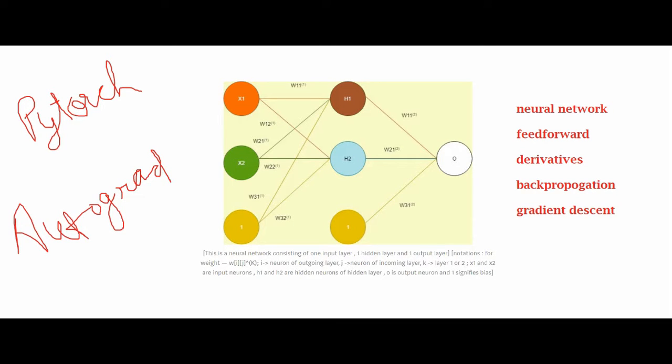For a neural network to learn, the process of derivatives is really important for gradient descent and backpropagation algorithms to work. Since we are calculating partial derivatives, we need to calculate the derivative with respect to all the parameters involved.